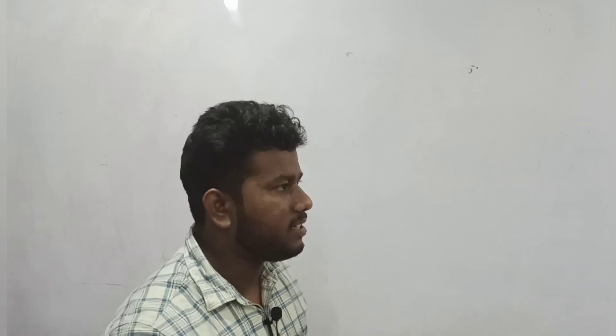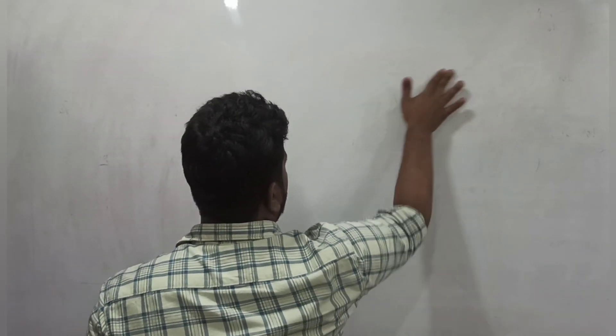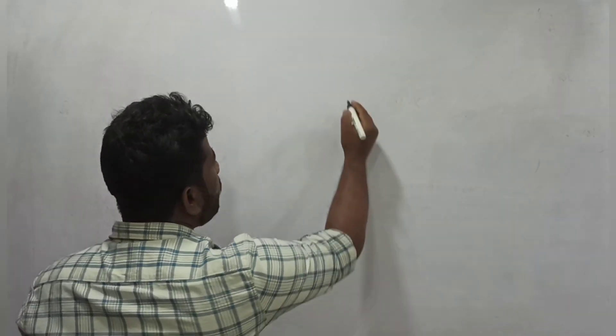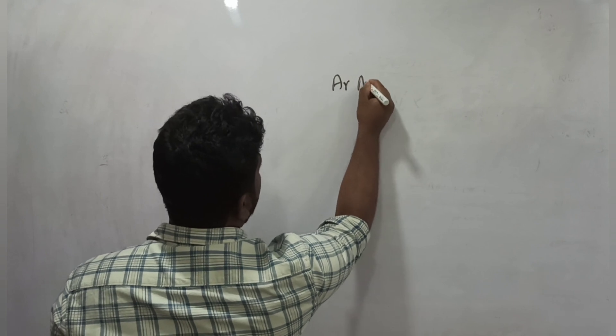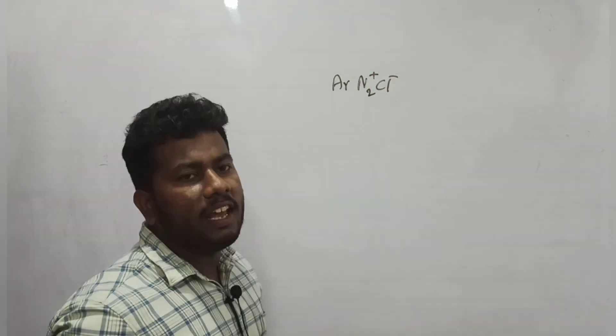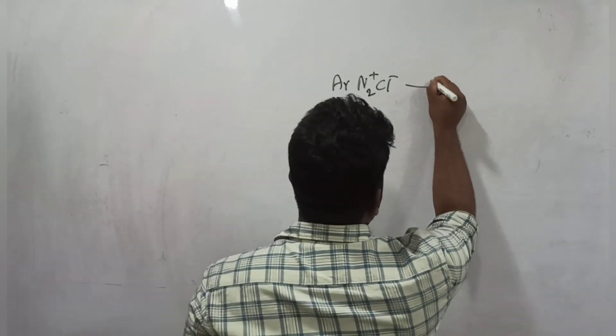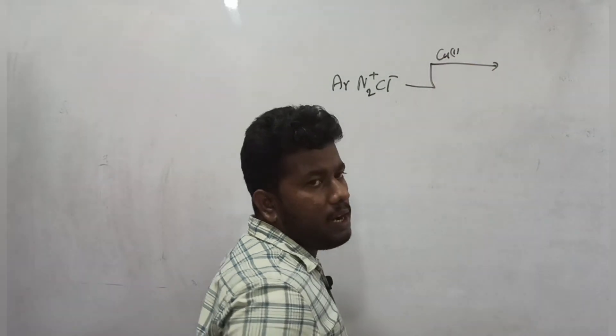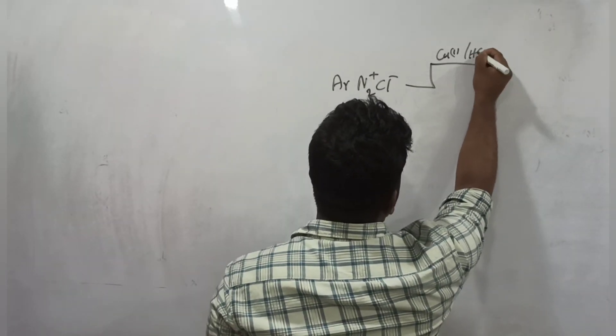We have a conversion reaction — two types of reactions. One is nitrogen-retaining reactions, and two is coupling reactions. One example: ArN2+Cl- with CuCl and HCl — Cu(I) ion presence — this is the Sandmeyer reaction.